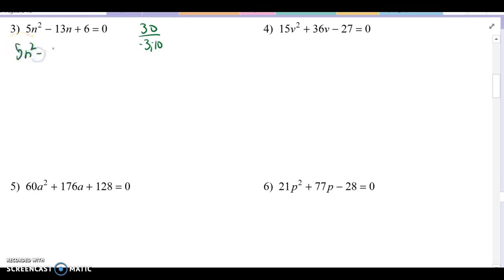So 5n squared minus 3n minus 10n plus 6 equals 0. Group everything. First two and the last two. n times 5n minus 3. That was with our GCF. And for the second part, once again, we have to have that leading term be positive. So we're going to factor out a negative. And then 2 goes into both of them. Gives us a 5n minus 3. The good news is those are the same. So we have 5n minus 3 times n minus 2 equals 0.